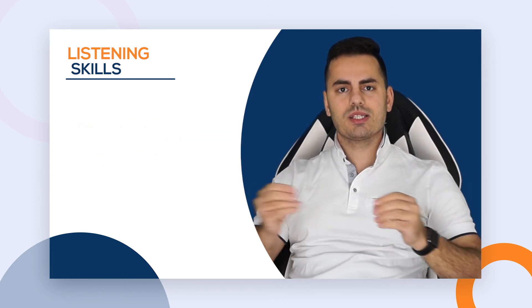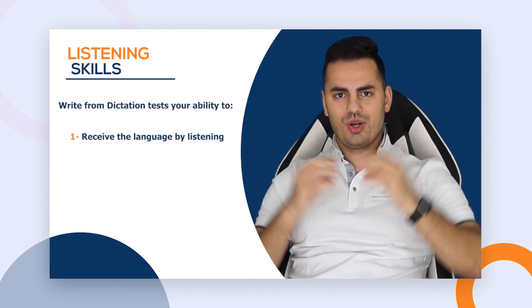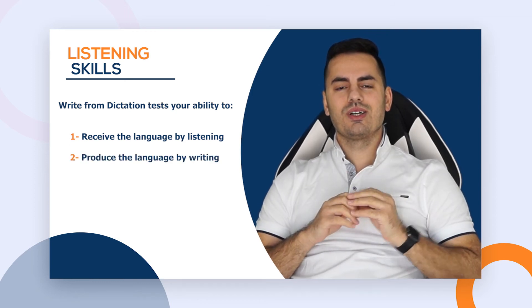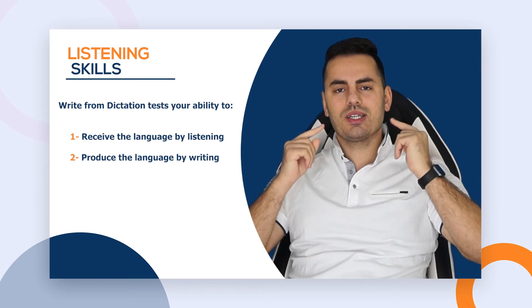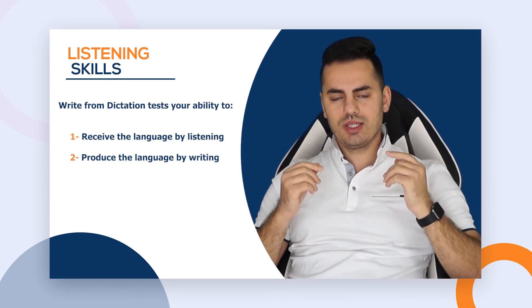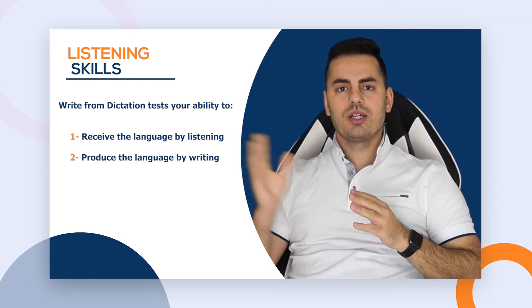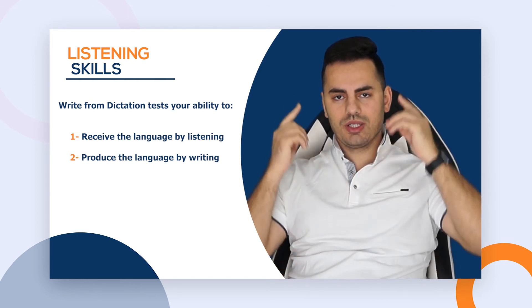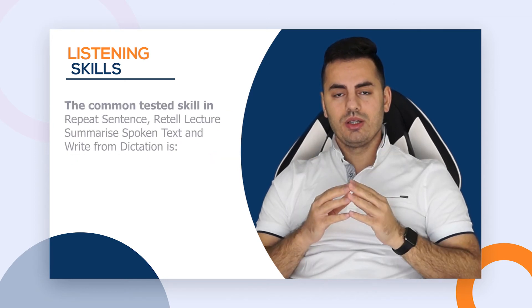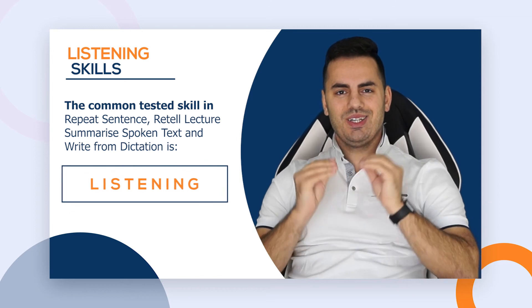Let's look at write from dictation. What skills does it test? You have to listen first, then you have to write — two sub-skills: listening and writing. Same for summarize spoken text: you have to listen then write. Same goes for retell lecture: you have to listen then speak. So we have something in common for all four tasks, which is listening — in all of them you must listen.